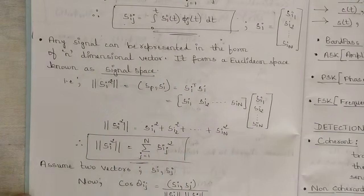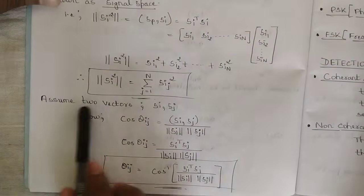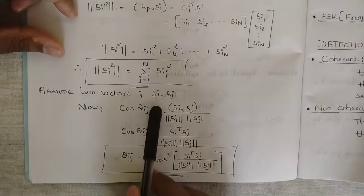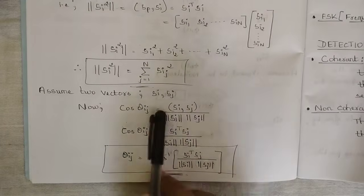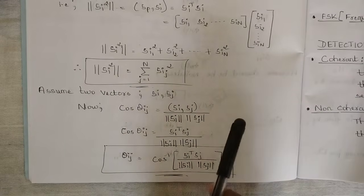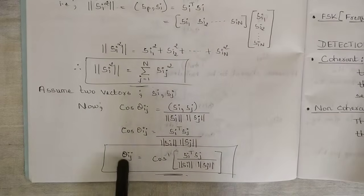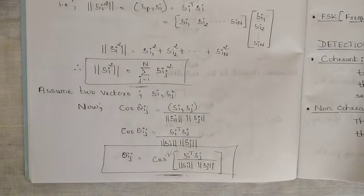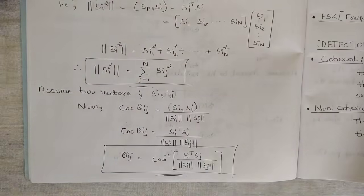Whenever problems involve signal space, this formula must be known. If we consider two vectors SI and SJ, the angle between them geometrically is given as: cos(φ_IJ) = ⟨SI, SJ⟩ / (‖SI‖ · ‖SJ‖), where ⟨SI, SJ⟩ is SI transpose times SJ. Therefore, the angle φ_IJ = cos⁻¹(SI^T · SJ / (‖SI‖ · ‖SJ‖)). This is the geometric angle when considering two orthonormal basis functions φ_I(T) and φ_J(T) with respect to their signal spaces.